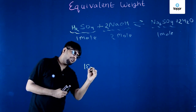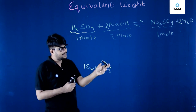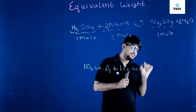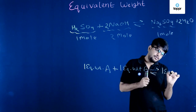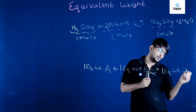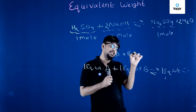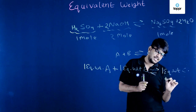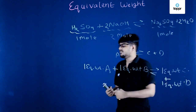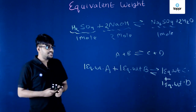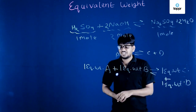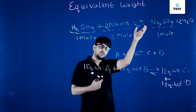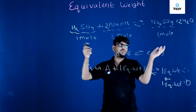Equivalent weight is a very different way of measurement. Mole is one way; equivalent weight is another. It's a special kind of measurement where if I take one equivalent weight of any substance A and react it with one equivalent weight of any molecule B, my output will be one equivalent weight of product C plus one equivalent weight of product D. So one unit of each reactant gives one unit of each product.